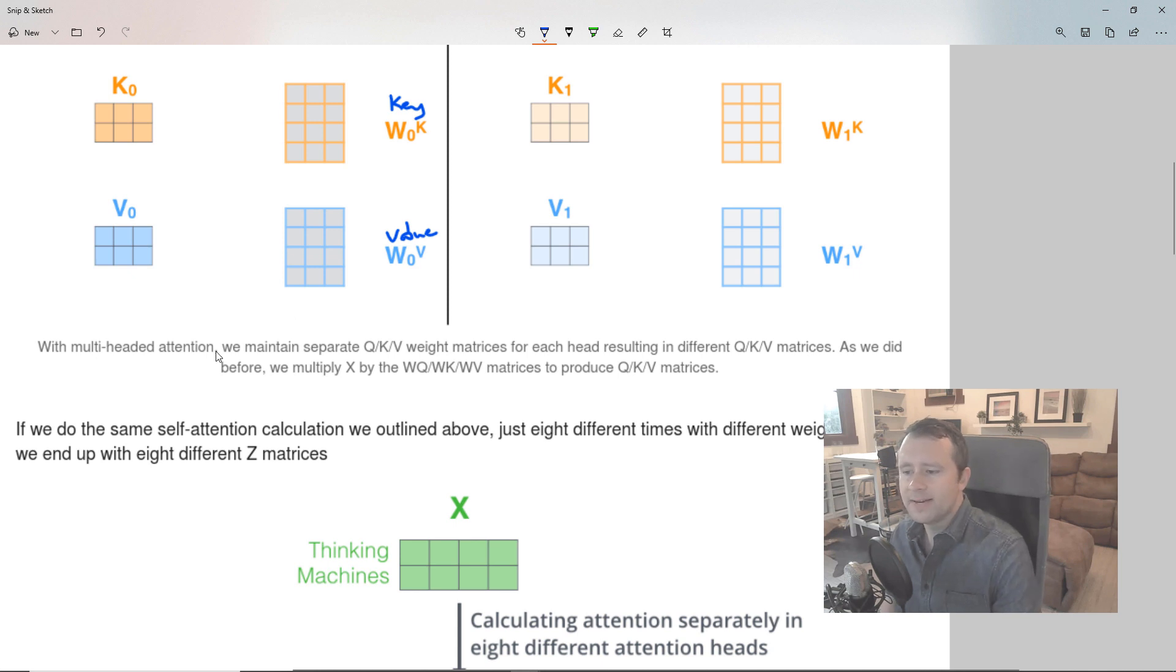And what we've done now is we've added a little subscript here. So this is attention head number zero. So there's a little zero next to all the weights, and then zero next to the matrices of query, key, and value vectors. And then same over here for attention head number one. So we'll actually have eight of these attention heads. With multiple headed attention, we maintain separate query, key, value, weight matrices for each head, resulting in different KQV matrices.